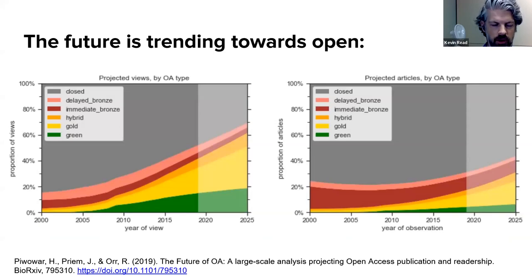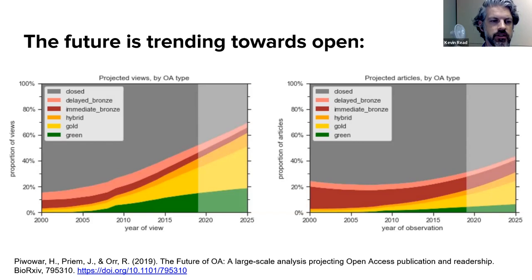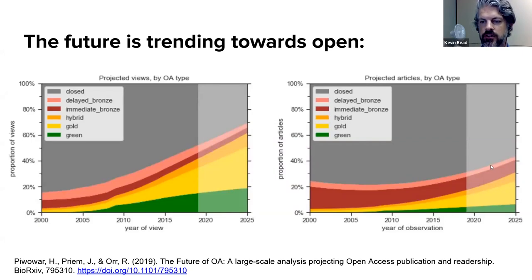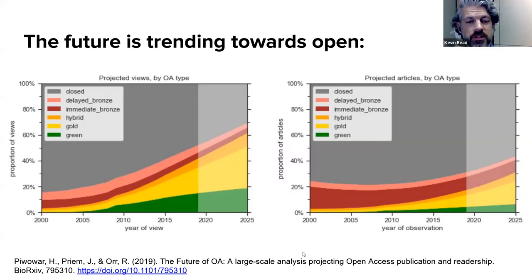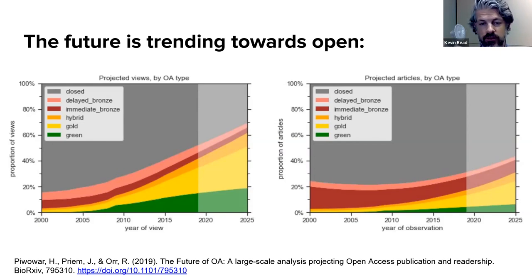Looking at research more broadly, this graph shows how open access is becoming more prevalent over the years. The gray bar represents closed research, and you can see a dramatic shift in how many articles are being viewed as open access. Projections show a trend increase in open access versus closed research in the coming years — open access is really the future, and as federal funding starts requiring open journals, we should see a dramatic shift from the closed research model.